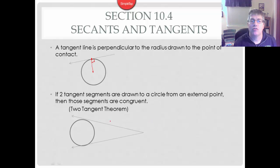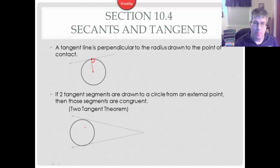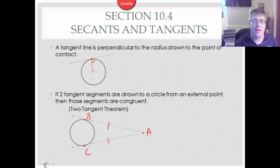If two tangent segments are drawn to a circle from an external point, then those two segments are congruent. You can shorten this to the two tangent theorem — you might use that as a reason in a proof. What we're essentially saying here is that AB and AC are congruent by the two tangent theorem, and that's actually fairly easy to prove. If we draw radii to the points of contact, those radii are going to be congruent, and we have right angles.